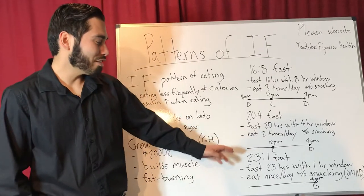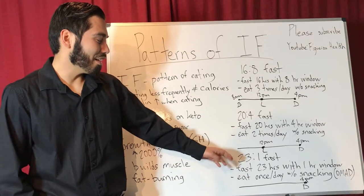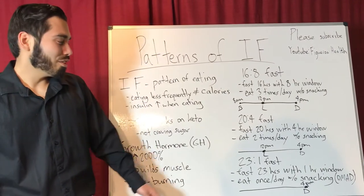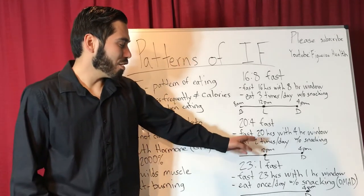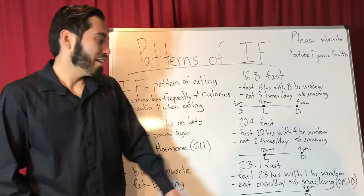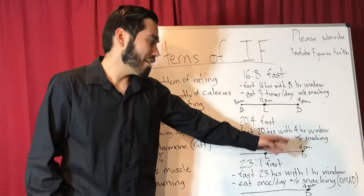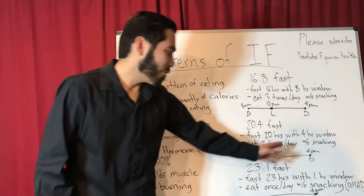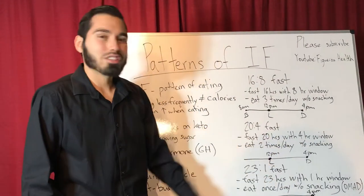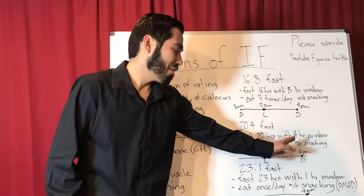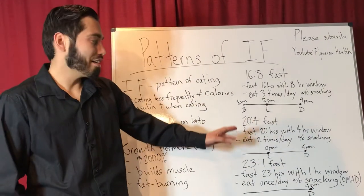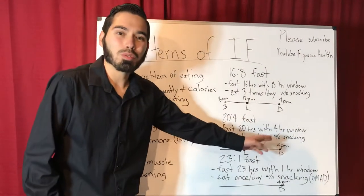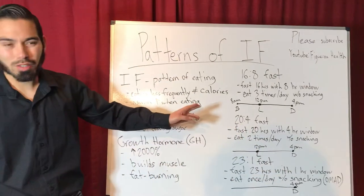For example, say someone wakes up and is not hungry at all — so why eat if you're not hungry? They prolong their fast until lunchtime around noon, then don't eat again until dinnertime around 4 p.m. After that, they don't eat anything until the following day at noon. From 4 p.m. all the way to 12 p.m. the next day is a 20 hour fast, with a 4 hour eating window from noon to 4 p.m.